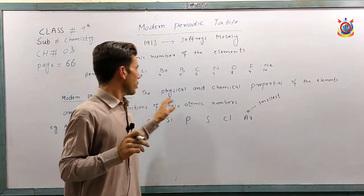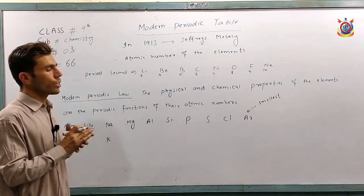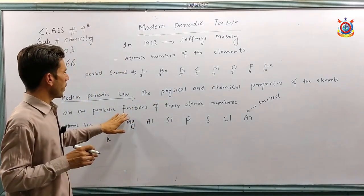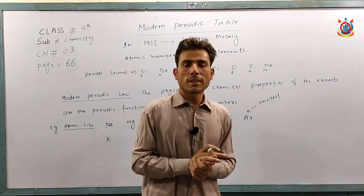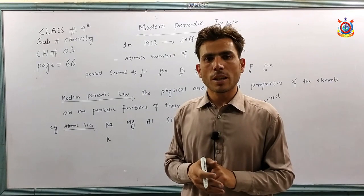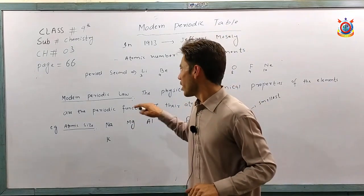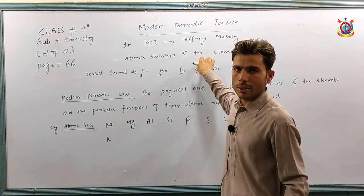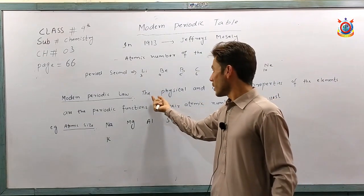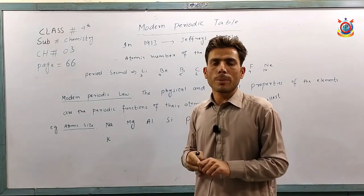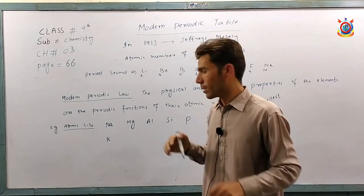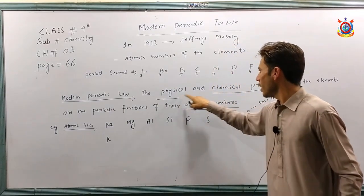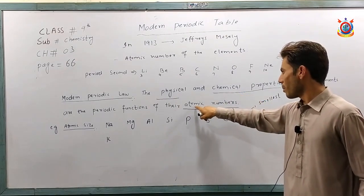Besides this, there is a law known as the modern periodic law, which states that the physical and chemical properties of the elements are the periodic functions of their atomic numbers. In simple words, this means that the physical and chemical properties of the elements depend upon the atomic number of the elements.